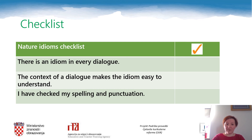When you finish, take a look at the table and check if you have included all the necessary elements in your dialogues: check if there is an idiom in every dialogue, if the context makes the idiom easy to understand, and see if you have any spelling or punctuation mistakes.